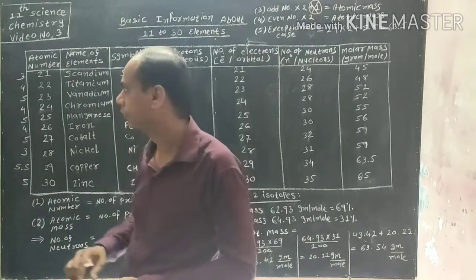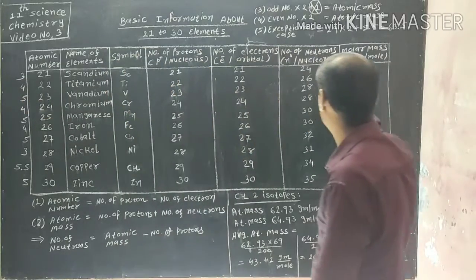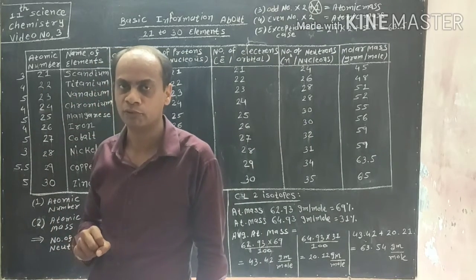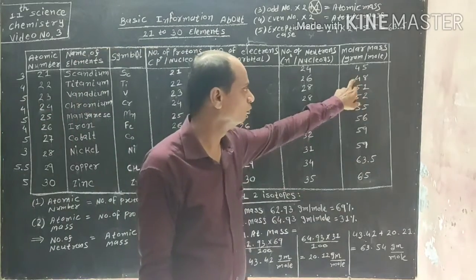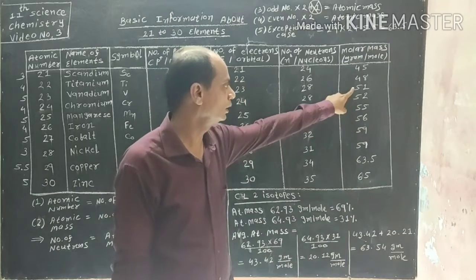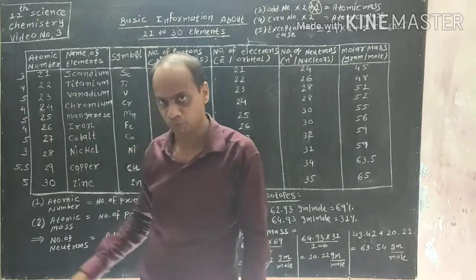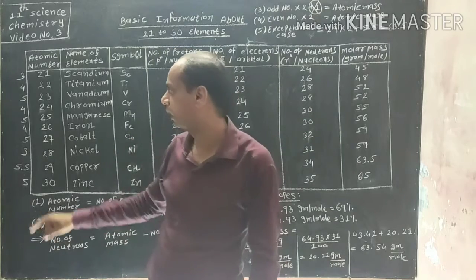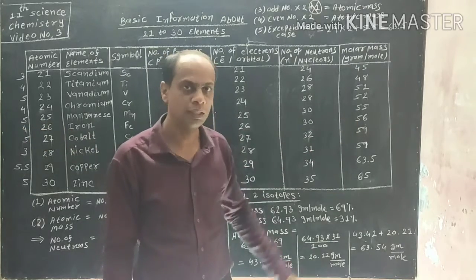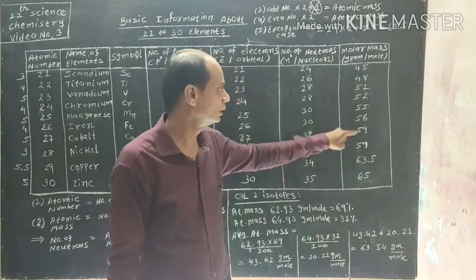Let's apply the rule. For 21 (odd): multiply by 2 gives 42, add 3, answer is 45. For 22 (even): multiply by 2 gives 44, add 4, answer is 48. For 23 (odd): multiply by 2 gives 46, add 5, answer is 51. For 24 (even): multiply by 2 gives 48, add 4, answer is 52. For 25 (odd): multiply by 2 gives 50, add 5, answer is 55. For 26 (even): multiply by 2 gives 52, add 4, answer is 56.